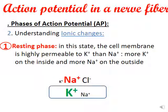Now we'll discuss the ionic changes at the level of depolarization (phase 3), repolarization (phase 5), and hyperpolarization (phase 6). Starting with the resting state, delta V equals minus 70 millivolts. In this state, the membrane is highly permeable to K+, so more K+ is on the inside and more Na+ is on the outside.